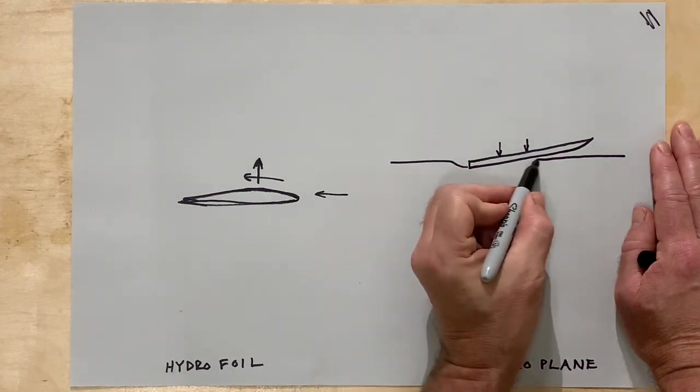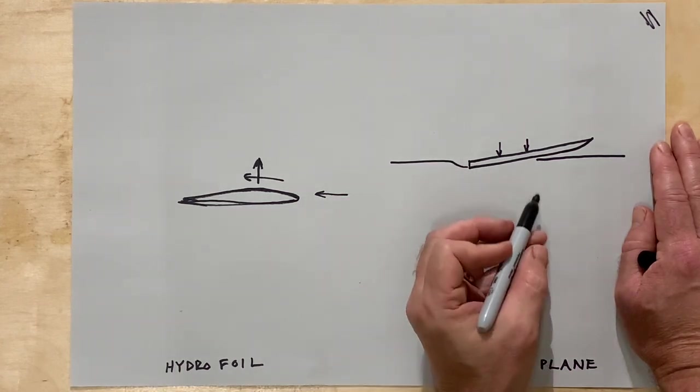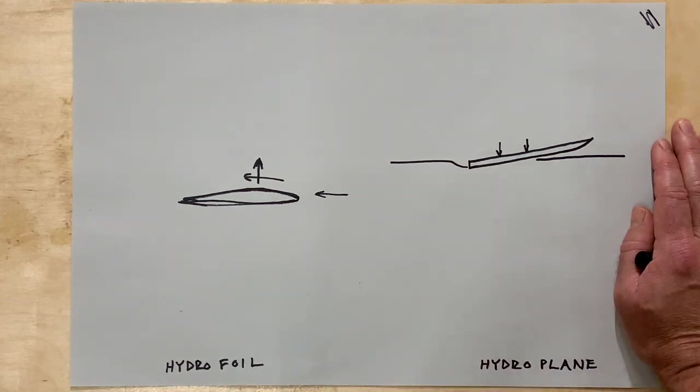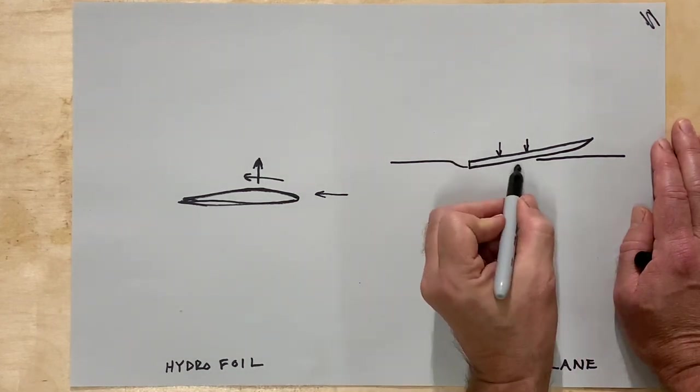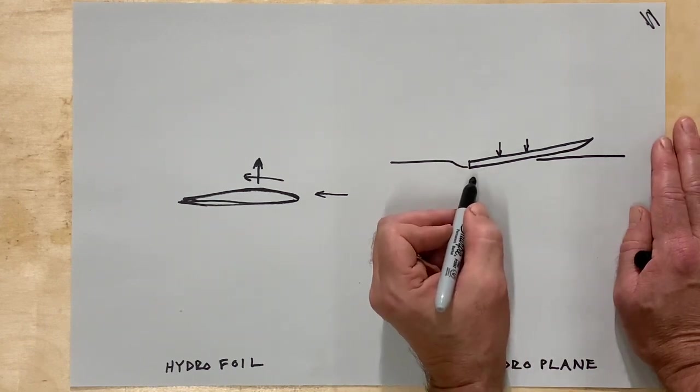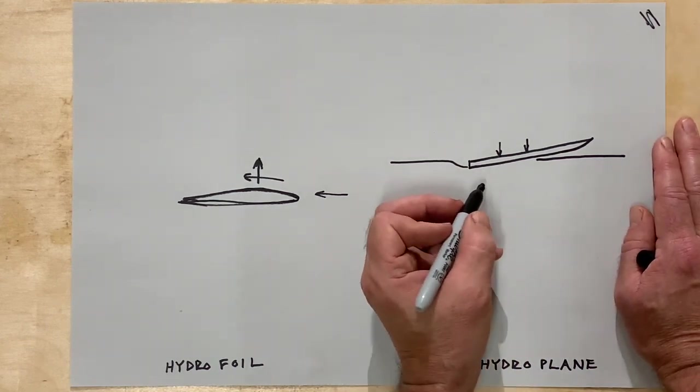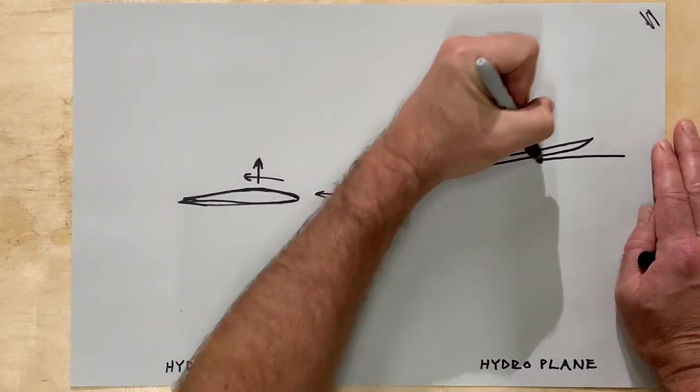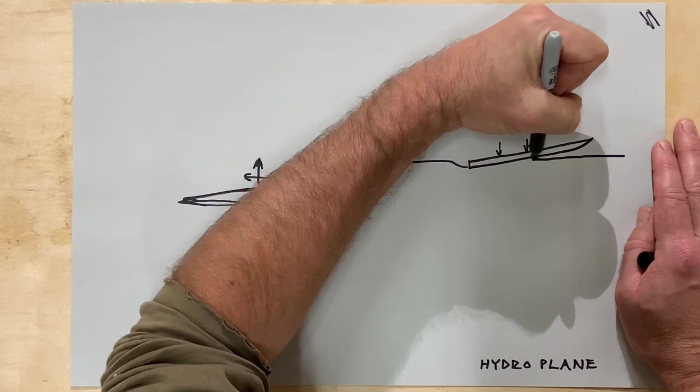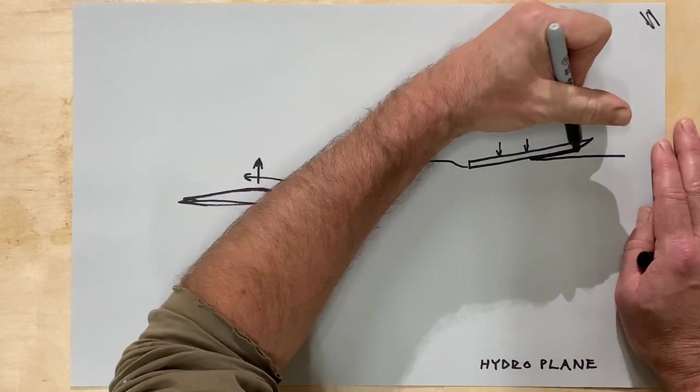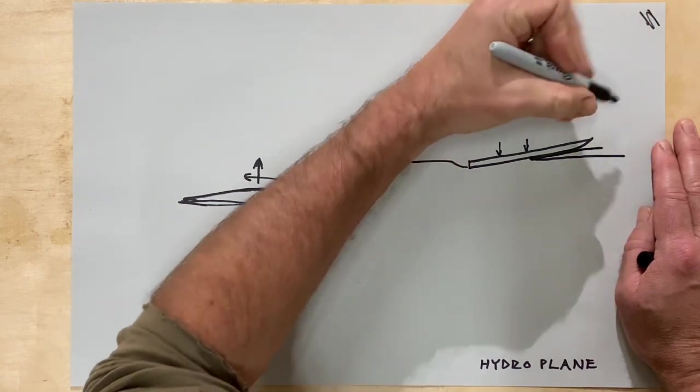So this gives you an inclined plane and what happens is the onflowing water basically hits this and is deflected. And there's a shift in the direction of the water downward and the lift is always, okay so let me show you here.